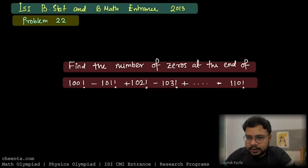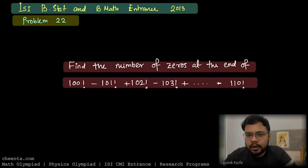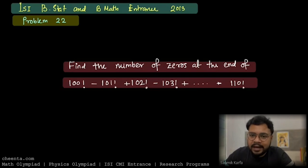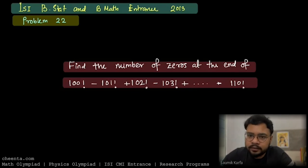First of all, we need to understand what causes the zeros at the end of any number. We will learn about a formula — a theorem — which can help us find the number of zeros at the end of a factorial number. After seeing these things, we hope to be able to solve this problem.